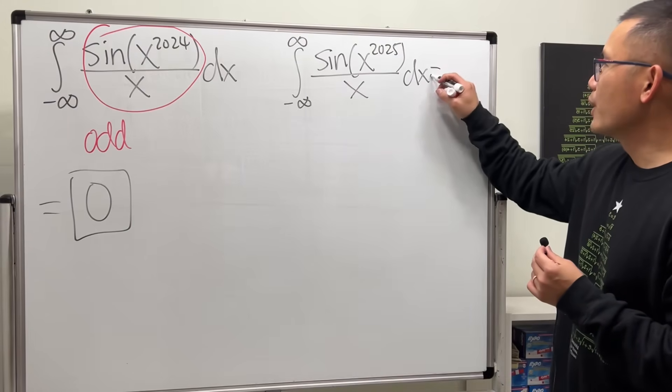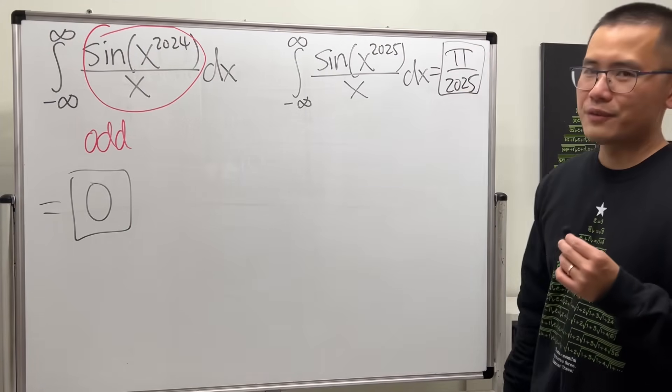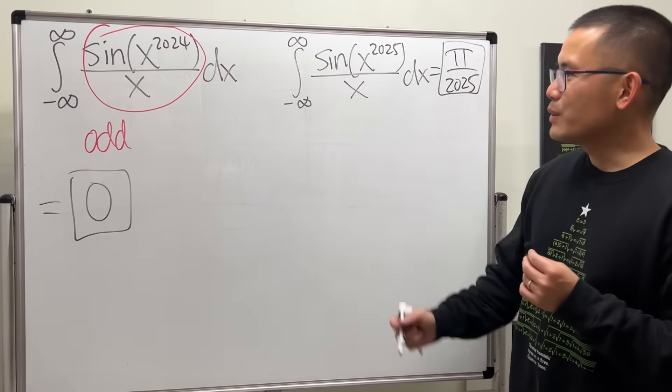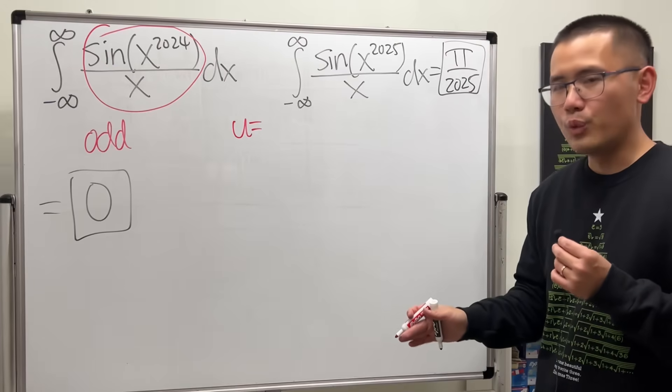Oh, by the way, I should tell you, the answer is π over 2025. About time for the new year. Alright, how do we do it? It's just the following. Take a nice u sub. That's all we need.